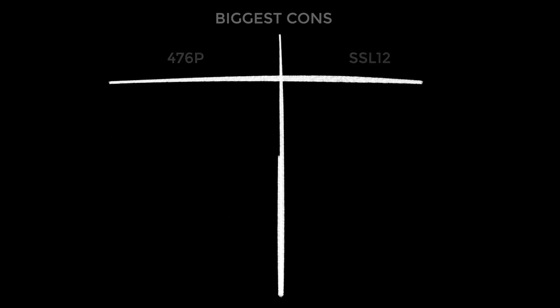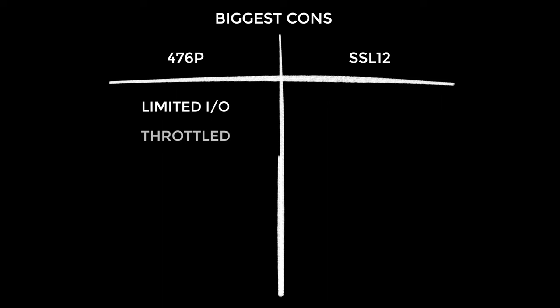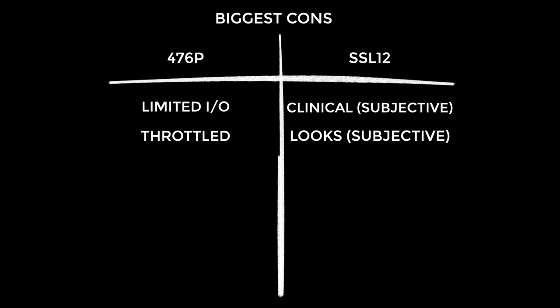The biggest cons: for the 476P, it has limited I/O, and it feels like its capabilities are capped so as not to cannibalize the higher-end Universal Audio range. For the SSL12, it does feel a little bit clinical to use, less inspiring. Subjectively the aesthetic, and it does feel slightly cheaper in terms of build quality in comparison — not bad, just not as good.